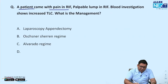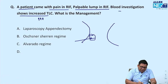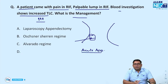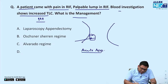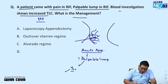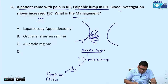A patient came with pain and a palpable lump in the right iliac fossa. Blood investigations show increased TLC. This points toward acute appendicitis. Whenever there is a palpable lump — caused by conglomeration of bowel — you must go for conservative management. What is conservative management? Broad-spectrum antibiotics, fluids, and supportive care — this regimen is known as the Ochsner-Scherin regimen.